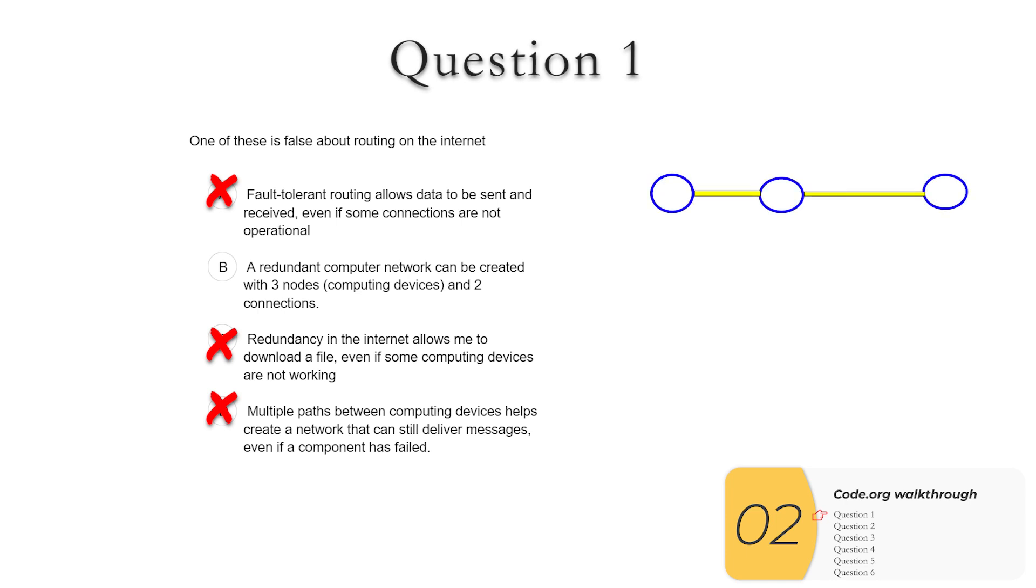So the answer is B, and if you draw it out, you can see if you have three nodes or three computing devices and only two connections, there's no way to make this redundant. Because as you know from selection D, you need multiple paths to make that happen, and you don't have that here. This question is also a little bit of practice with terminology. You'll see the terminology nodes. Those are more or less the same as computing devices. So the answer here is B.